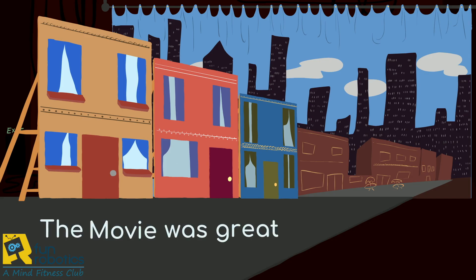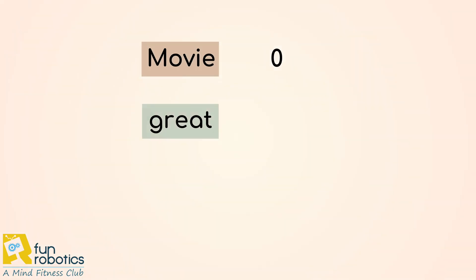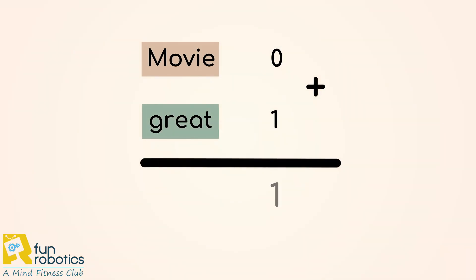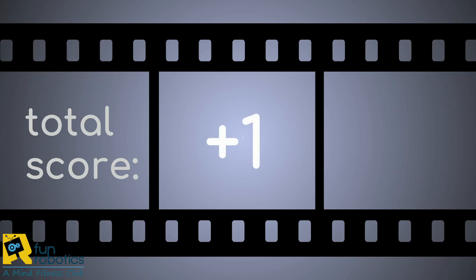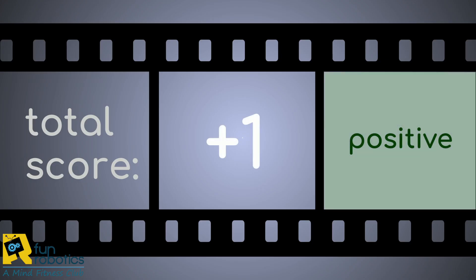Let's look at the sentence: the movie was great. The first step is to remove unnecessary words and identify the important ones, so the sentence will become 'movie great.' Each word will be classified into one of the three categories depending on the trained data. This will most likely result with a positive for 'great' and neutral for 'movie,' ending up with the summation of zero and one. The final score is one, meaning the overall sentiment of the sentence is positive.